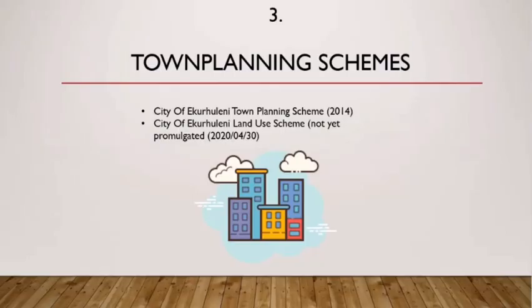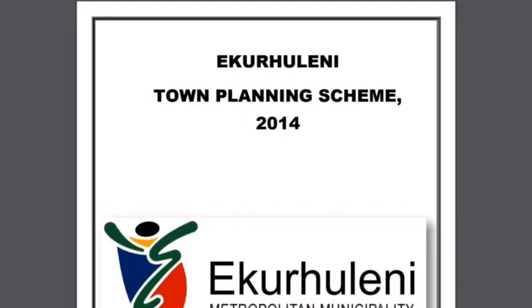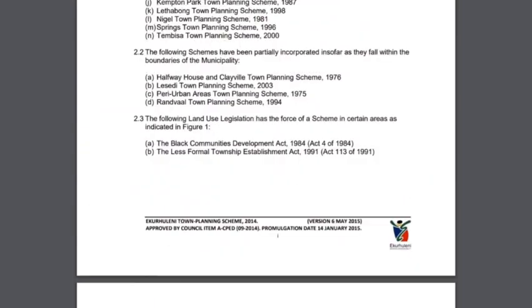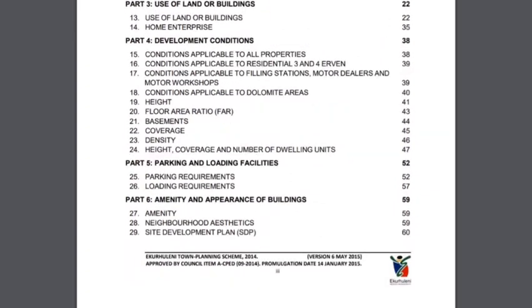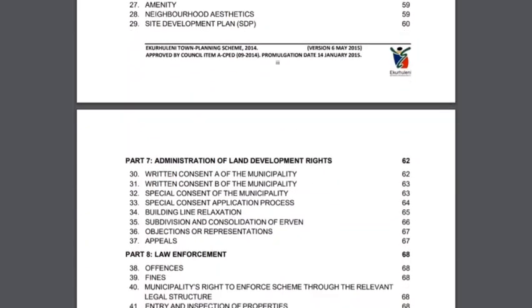The third tool we use to obtain property data and determine property potential is town planning schemes, such as the City of Ekurhuleni Town Planning Scheme 2014 and the City of Ekurhuleni Land Use Scheme, which has not yet been promulgated. Town planning schemes contain a plethora of land use management information, so I'll run you through the land use management table contained in the City of Ekurhuleni Town Planning Scheme 2014. The scheme mostly deals with building lines and lines of no access, use of land or buildings, development conditions, parking and loading facilities, administration of land development rights, and law enforcement.